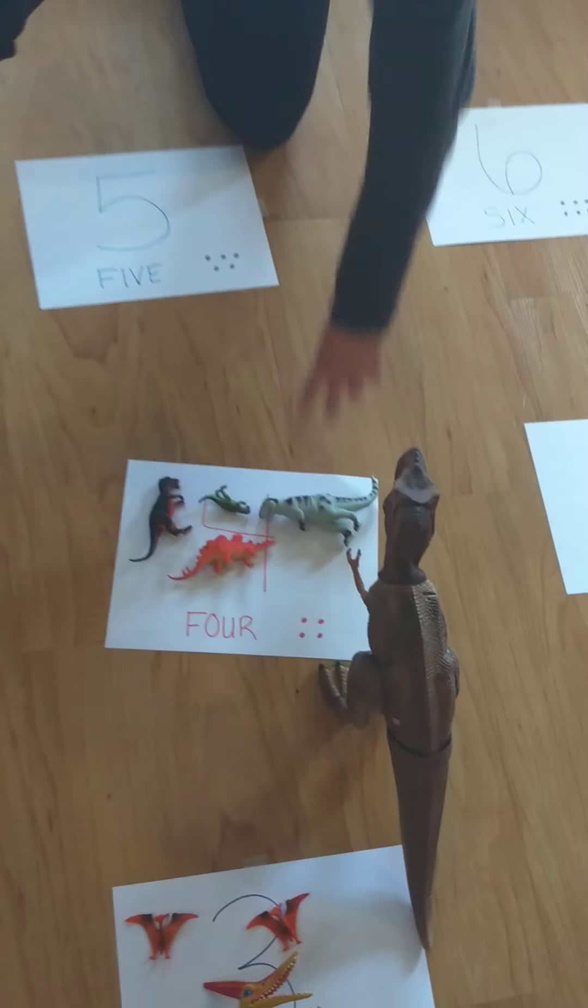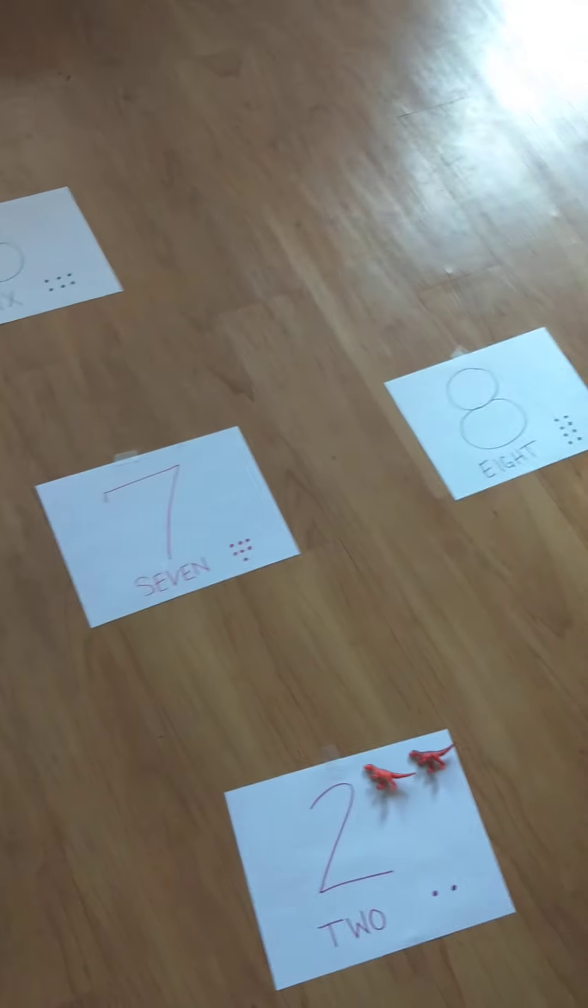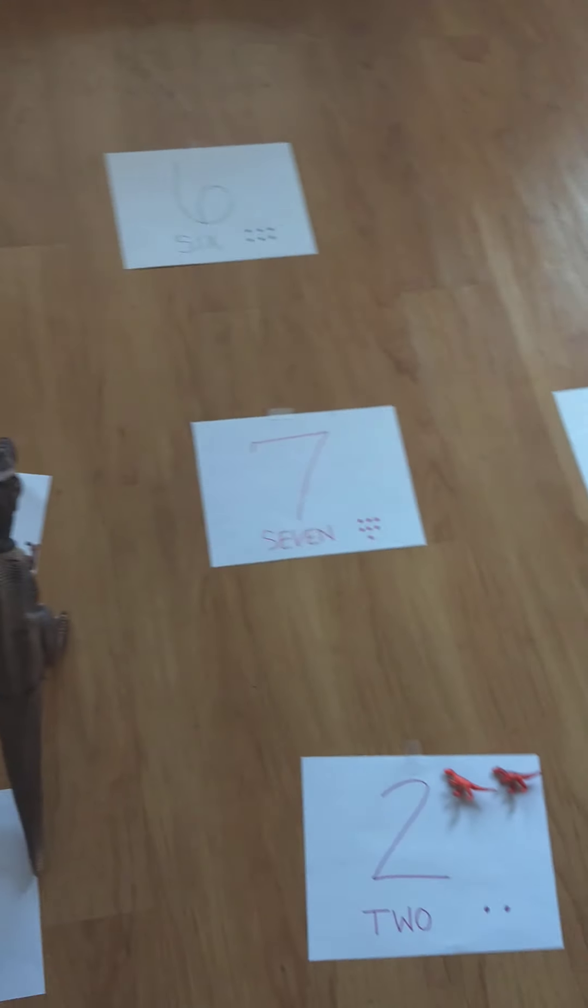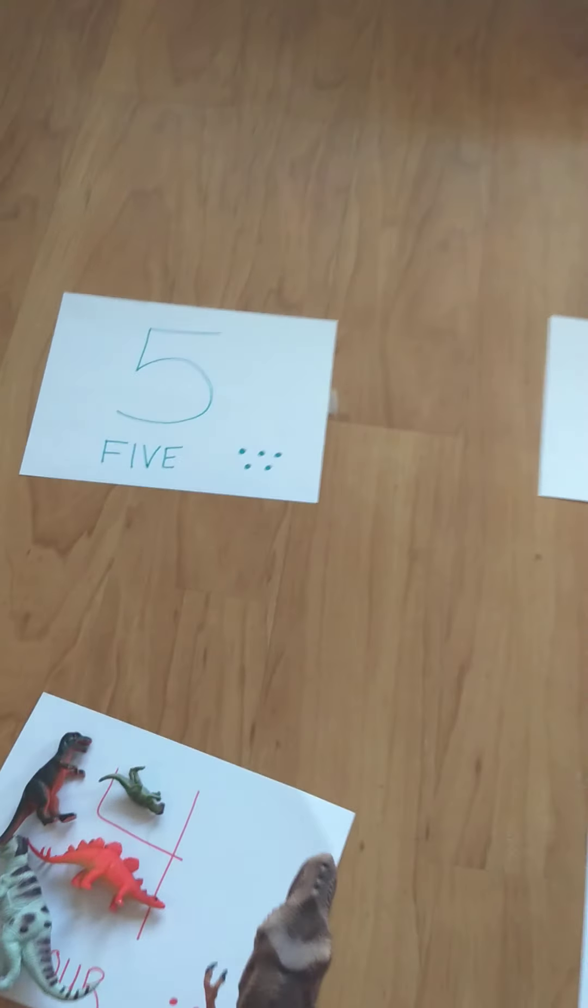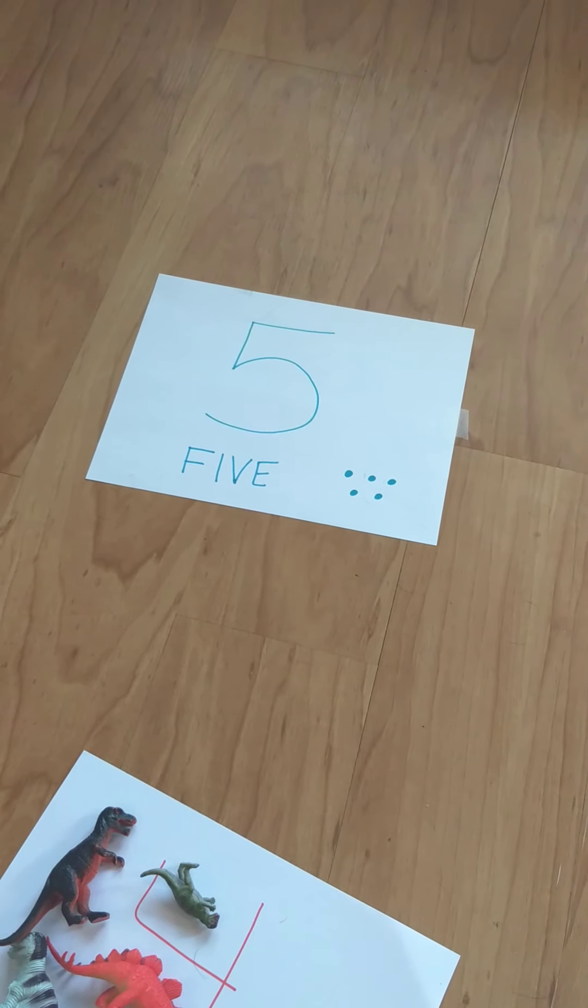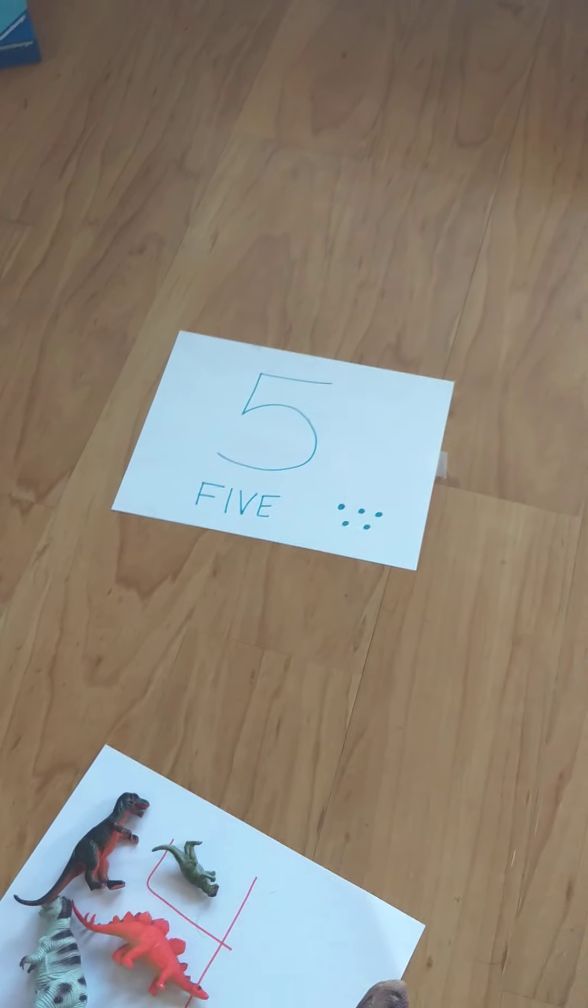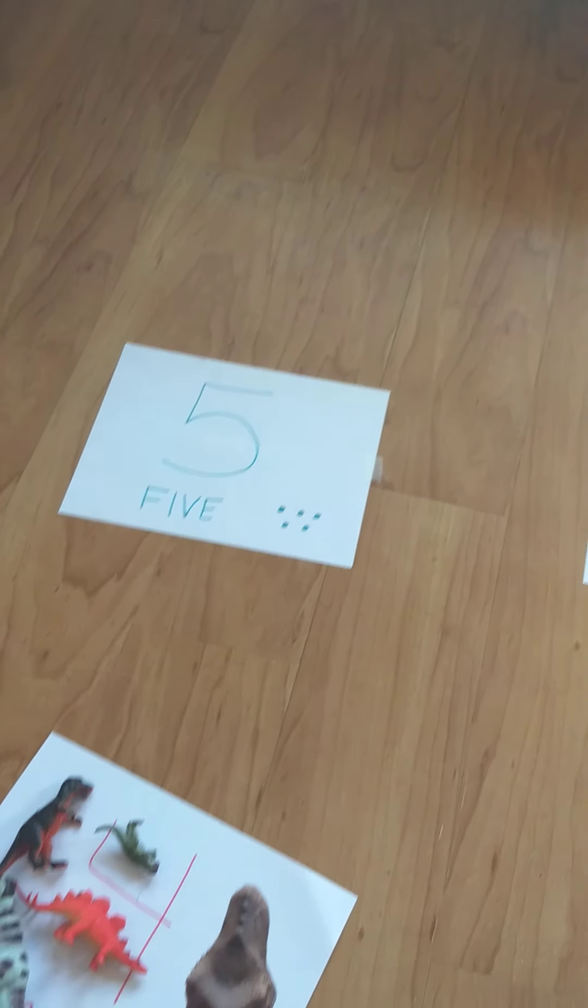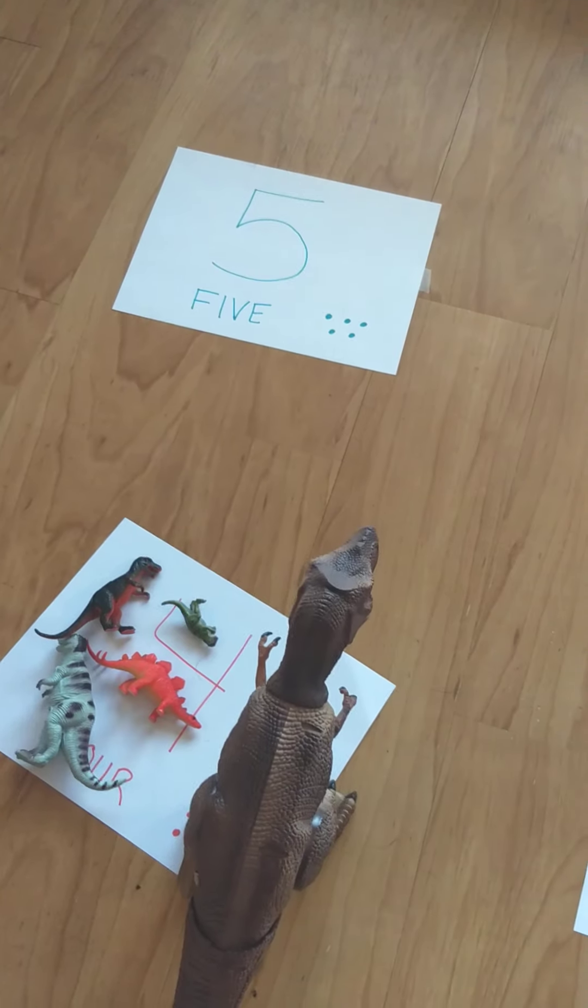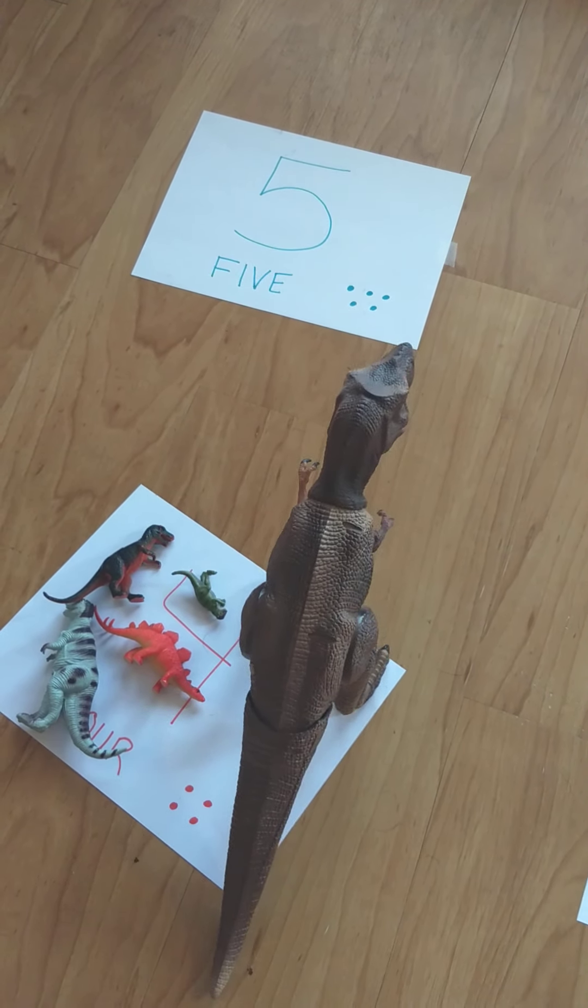Alright. Alright, now we're going to go find number 5. It could be anywhere. There's number 5. Can you count the dots? 1, 2, 3, 4, 5. Alright, here we go, noisy dinosaur. I think he's hungry. He might be hungry, Carson.